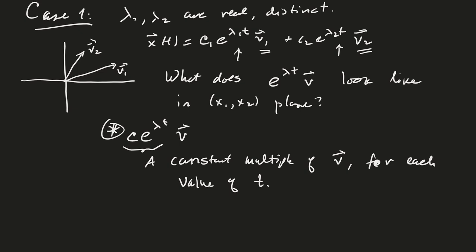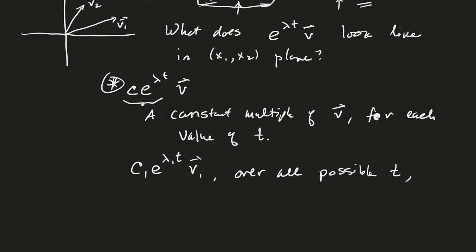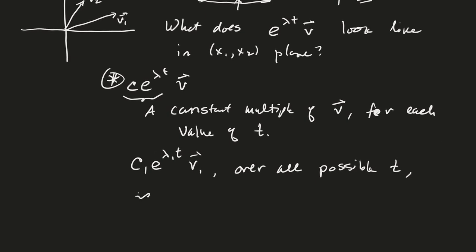this is a constant multiple of the vector V for each value of T. Okay, so therefore, this thing, if I just plot this thing by itself, C1 e to the lambda one T times V1, so C1 e to the lambda one T times V1 for all T, for all possible T, that is a line, or I should say is a ray emanating from the origin.